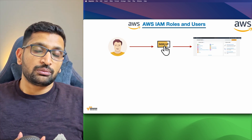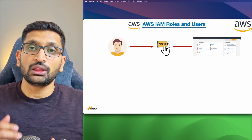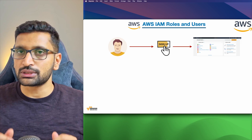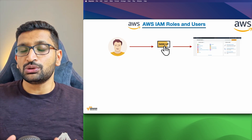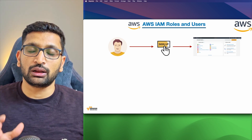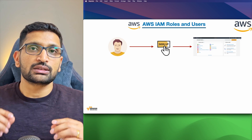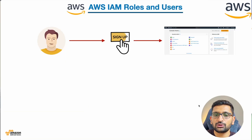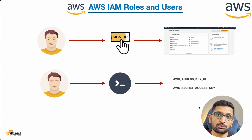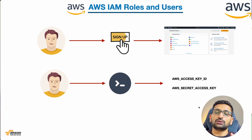Now you have done your first step — you have signed up and have an AWS account. The next thing I'm going to talk about is the Command Line Interface access for your AWS account. AWS not only provides you the GUI but also a Command Line Interface so you can access the same services using the AWS CLI. The credentials I'm talking about are the AWS Access Key ID and AWS Secret Access Key — these are the two credentials you need to access AWS services from your command line.